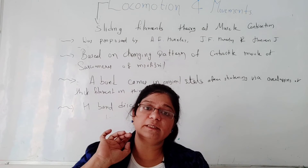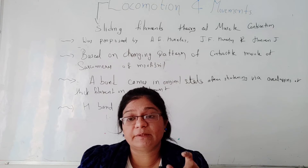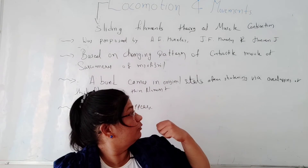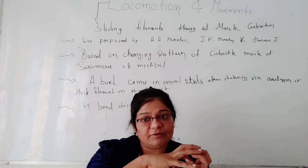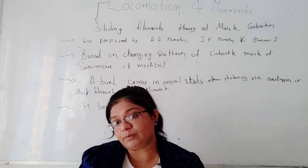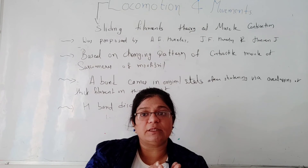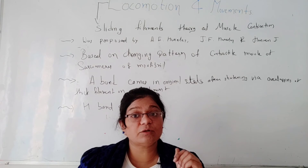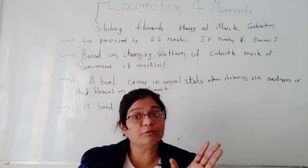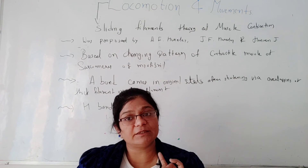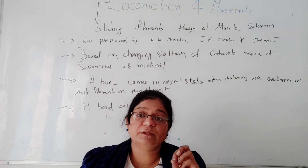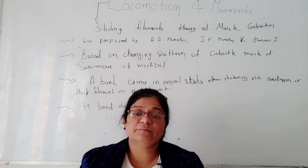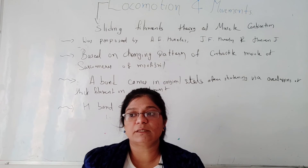There is an elastic fiber in our I band — the anisotropic band — which contains the Z-line at the center. As I mentioned, A bands shorten and then return to their original position, while I bands shorten only and H bands disappear. The I bands have elastic fibers with the Z-line at the center. The region not overlapped by any other band is called the H-zone. During muscle contraction, the myosin heads or cross bridges come into close contact.